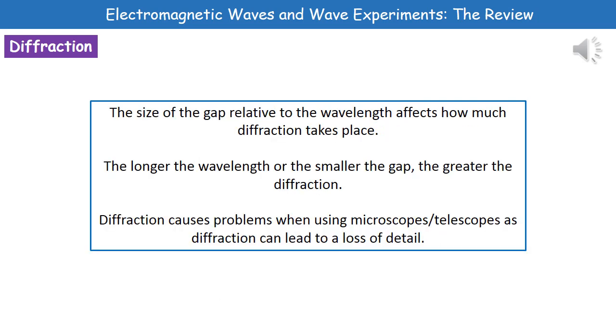If we consider the size of the gap, we find that it will have an effect on how much diffraction takes place. Generally, if we've got a longer wavelength or if we have a smaller gap that our wave is passing through, we're going to see a greater amount of diffraction occurring. So longer wavelength or smaller gaps lead to greater diffraction. While it's helpful for allowing us to hear sounds around a corner, if we're thinking about any of our optical devices like telescopes and microscopes, diffraction can actually be problematic. What we're seeing is that our light is passing through a small gap in reality and therefore it's going to experience diffraction. That spreading out of our light means we can lose some detail on the other side and end up with a slightly blurred image.